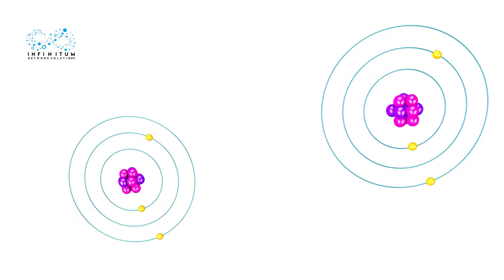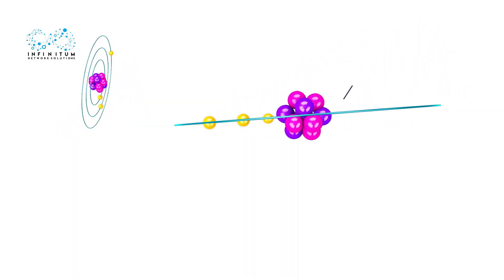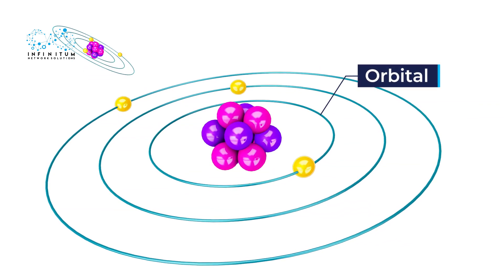Electronic Configuration of Atoms. We know that atomic orbitals are the substationary states or the regions in space where the electrons revolve around the nucleus in an atom.